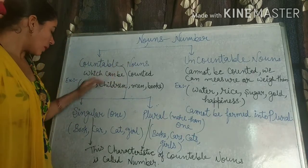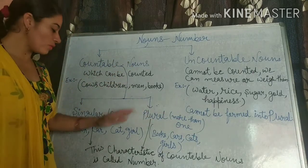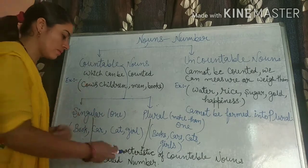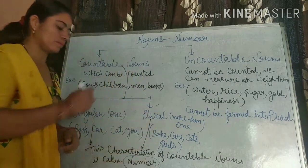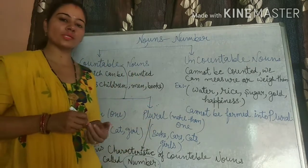Uncountable noun ka yahi characteristic — singular ya plural form kahlata hai — number. That is called number. Is it clear, students?